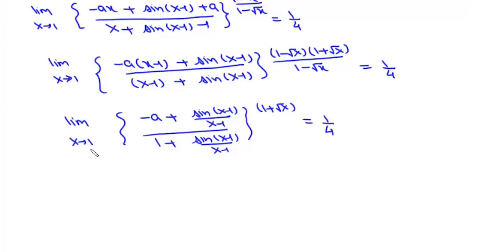Now as x tends to 1, this is sin 0 which is 0, a 0 upon 0 form, and it is a standard limit whose value is 1. So this limit is 1 and this limit is also 1, and here this power will be 2.